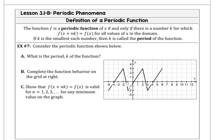In our definition here, we say the function f is a periodic function of x if and only if there's some number k for which the function at x plus n times k is equal to the y value of the function for all values of x in the domain. If k is the smallest such number, then k is called the period of the function.